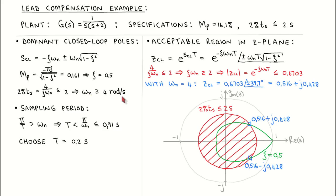Before we can map these closed loop poles to the z-plane, we have to choose the sampling period. Since a digital control system cannot represent frequencies higher than the Nyquist frequency, the Nyquist frequency should be well above the closed loop bandwidth, which is approximately given by the natural frequency of the dominant closed loop poles. We can therefore calculate that the sampling period must be less than or equal to 0.91 seconds. We choose the sampling period to be about five times shorter than this limit, which means the sampling frequency is about 10 times higher than the closed loop bandwidth.